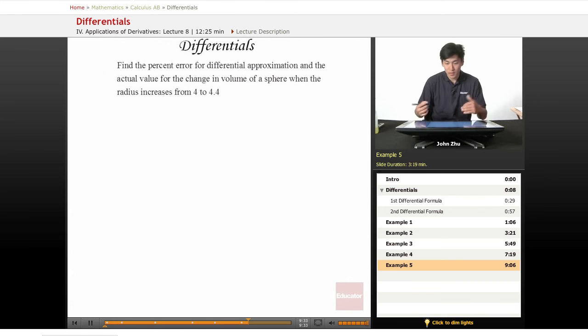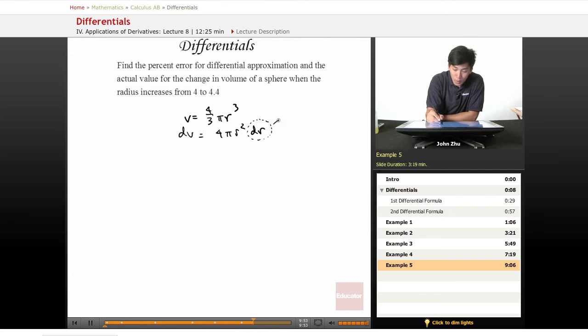Now we know the original radius. So going back to what we did for the last problem, v equals 4/3 pi r cubed, dv equals 4 pi r squared dr. So we know the change in radius is 0.4, and we know the original radius is 4. So we're looking for the change in volume.